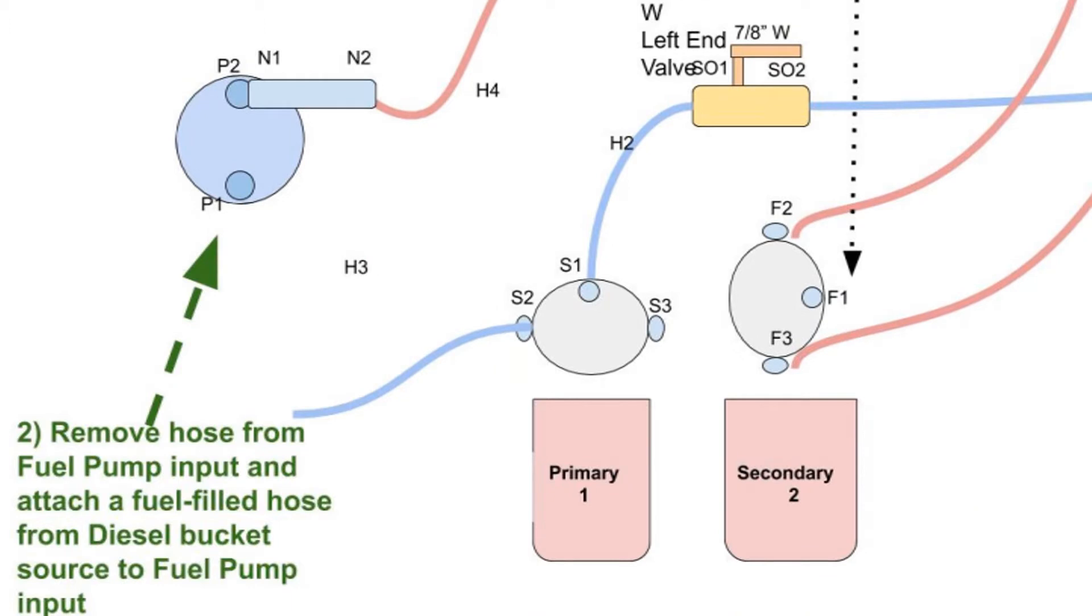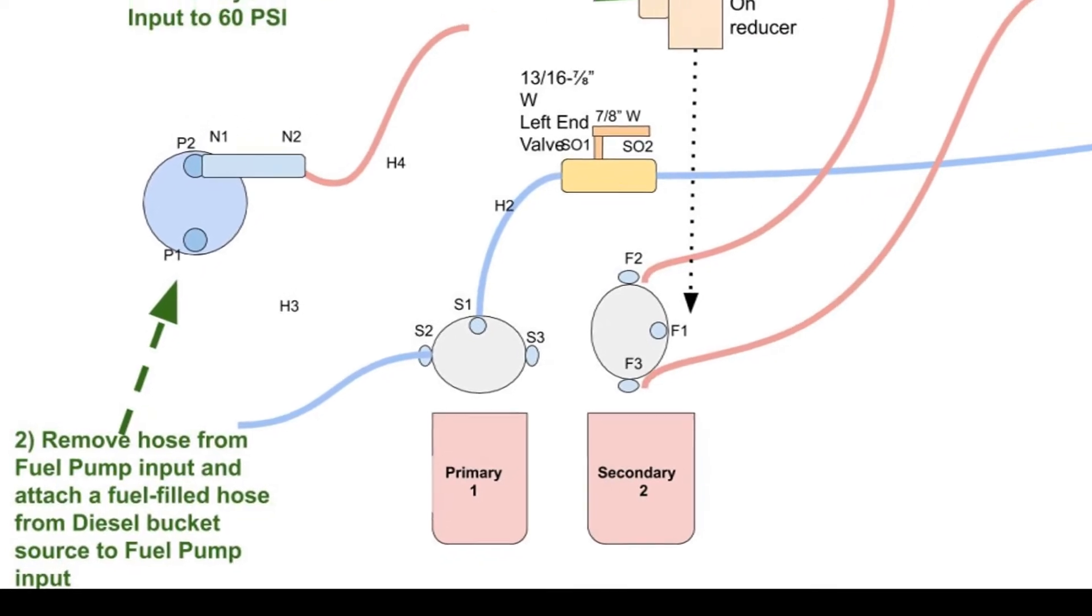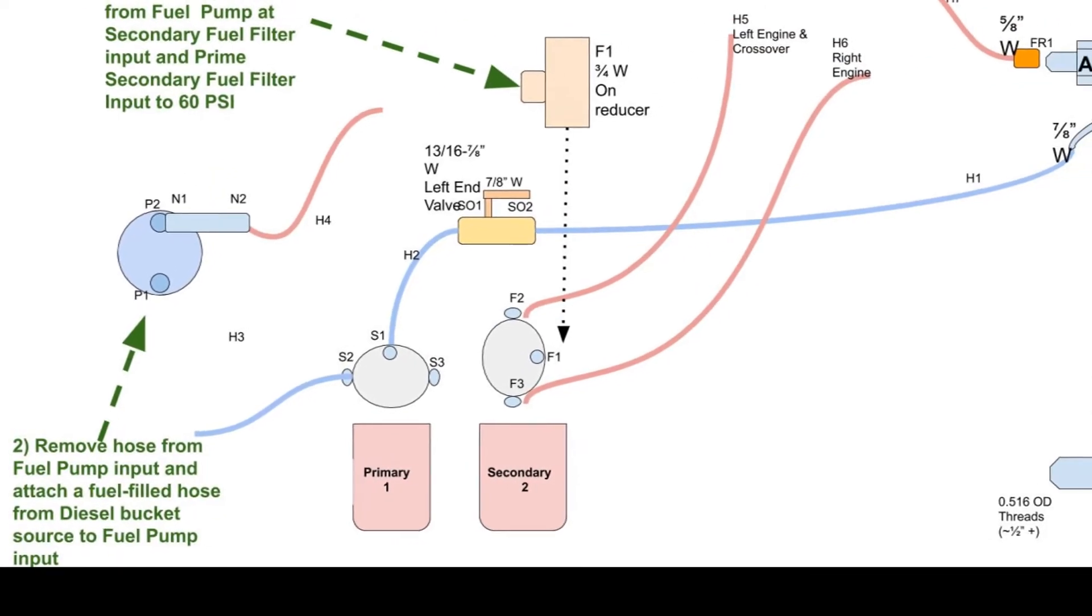Third, the mechanic attached one end of a known good fuel line to the fuel pump input, filled it with clean fuel, and placed the other end of this fuel line in a container sitting on the bucket holder of a stepladder.